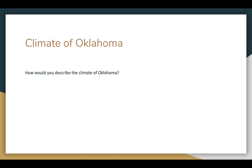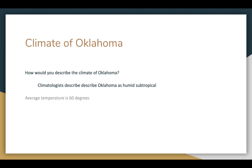The climate of Oklahoma is something to consider carefully. Climatologists would describe Oklahoma as humid subtropical. In late summer — July, August, early September — we would agree with this description. It is humid, it rains a lot, and we have pop-up storms. It's subtropical because of this rain phenomenon, though not truly tropical. Humid subtropical means an average temperature of about 60 degrees, with short mild winters and long hot summers.